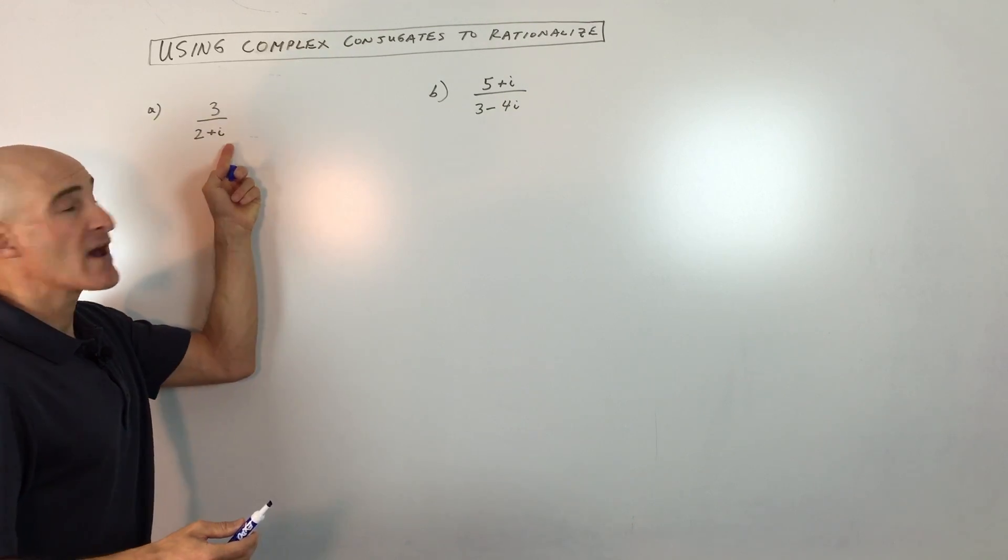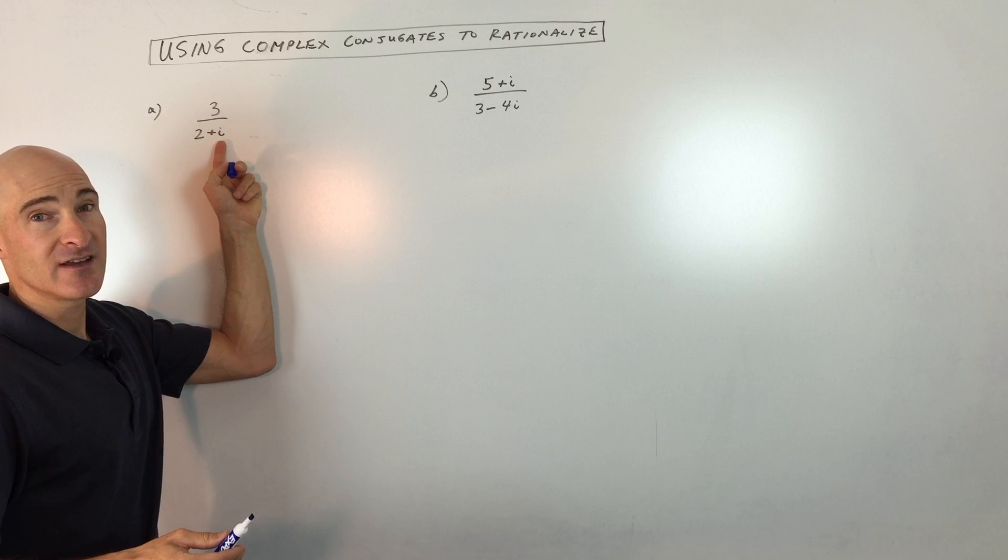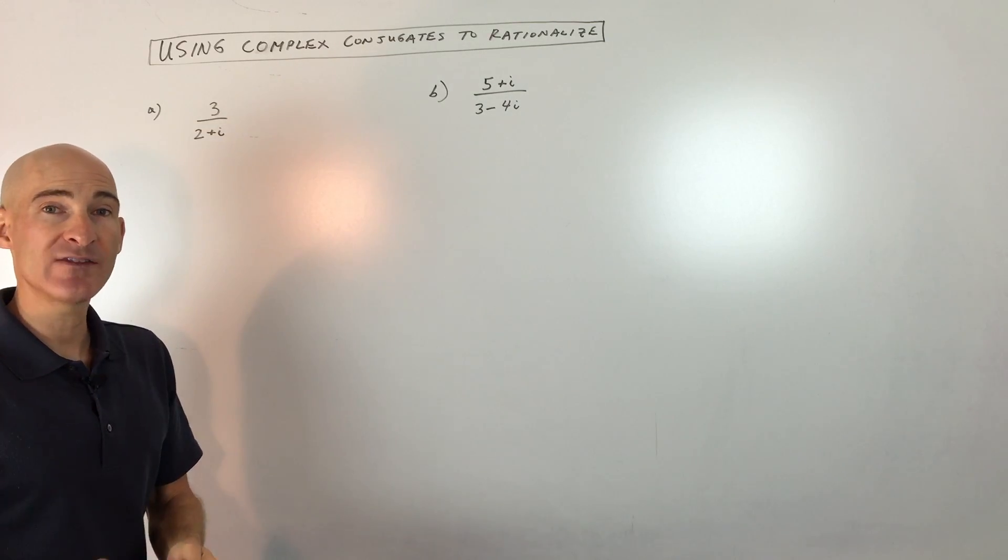The main issue here when you're working with imaginary numbers is that you can't have an i in the denominator. That's considered improper. So you want to get rid of that i in the denominator.